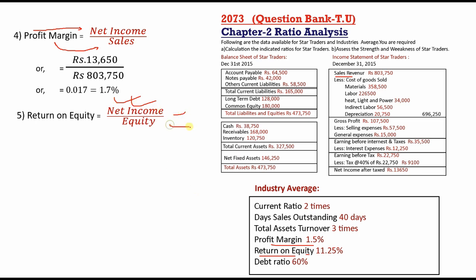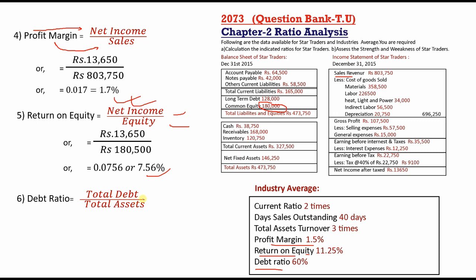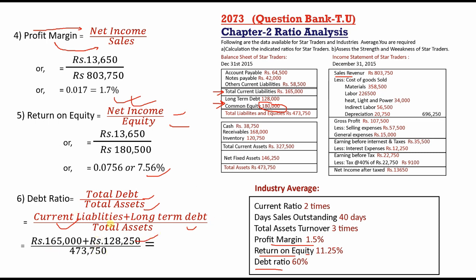Return on equity (ROE): net income divided by equity. Net income is $13,650. From the balance sheet, common equity is used. ROE = 7.56 times. Debt ratio = total debt divided by total assets. Total debt = current liabilities $1,65,000 plus long-term debt $1,28,250. Total assets $4,73,750. Debt ratio = 61.9%.